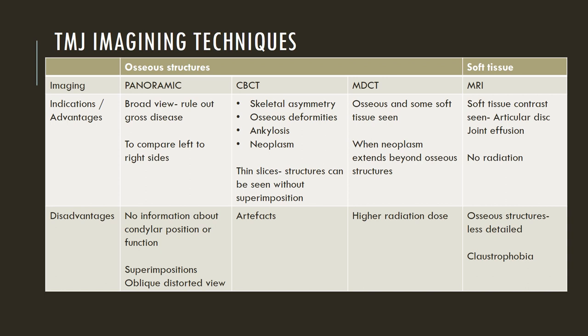When it comes to a multi-detector CT scan, it is one of the best imaging modalities to see the osseous structures, and you can also see some parts of the soft tissue at the same time. It is considered a superior additional imaging modality, especially when looking at neoplasm extending beyond the osseous structures of the TMJ.